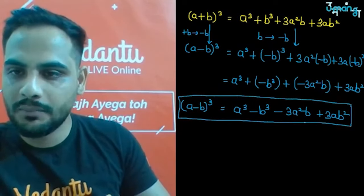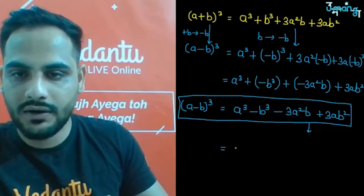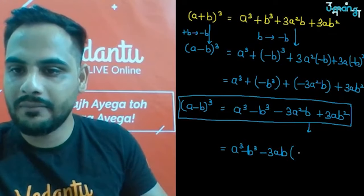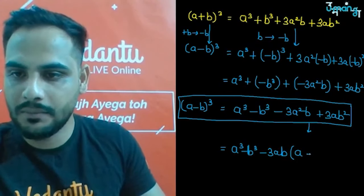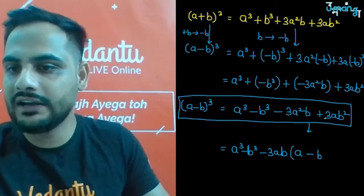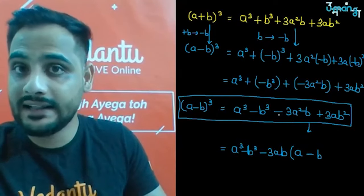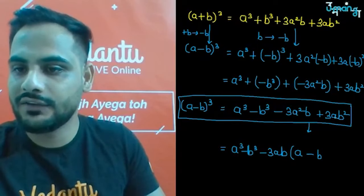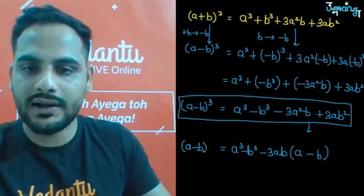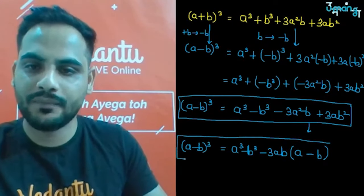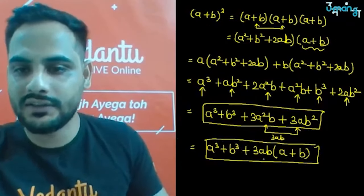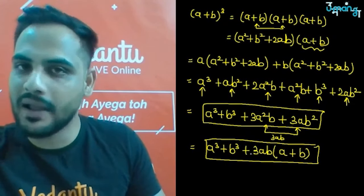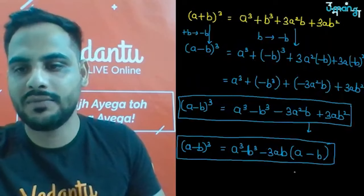There is one more form: from the last two terms -3a²b + 3ab², take -3ab common. You are left with a and then (-b) because the negative is taken common, so the sign changes. So (a-b)³ = a³ - b³ - 3ab(a-b). Or using the substitution approach, replacing b with -b in the compact form also gives the same result.